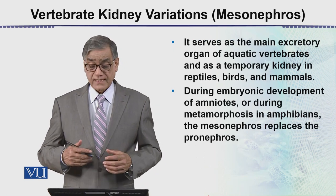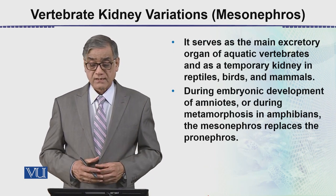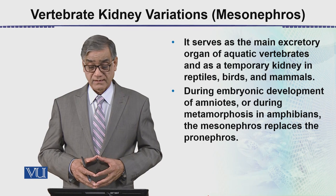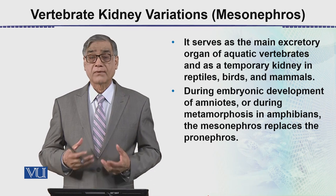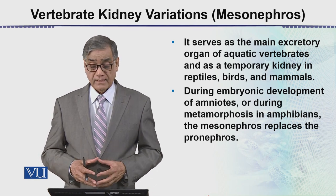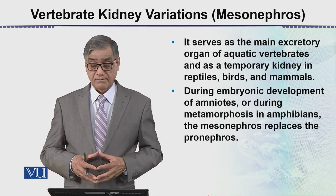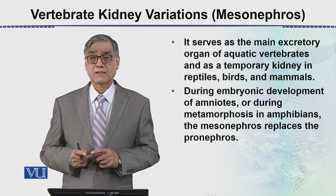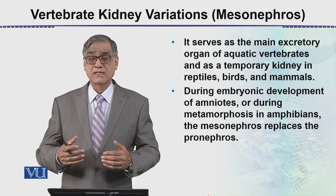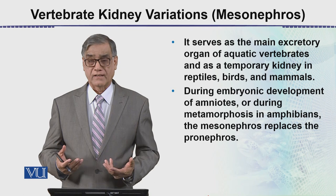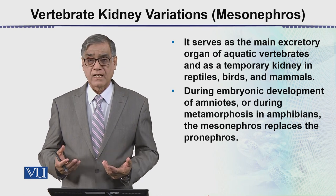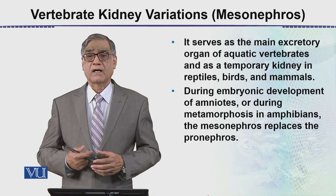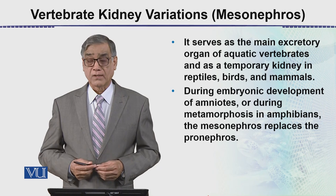The mesonephros serves as the main excretory organ of aquatic vertebrates and as a temporary kidney in reptiles, birds, and mammals. In these three groups the mesonephros is temporary because the metanephros has to develop further ahead.